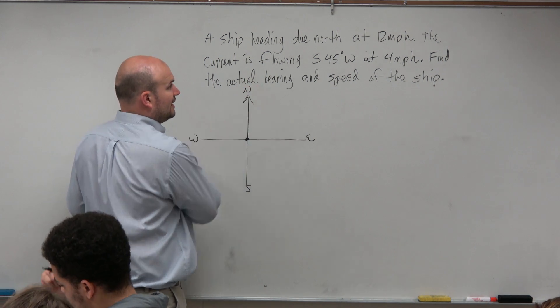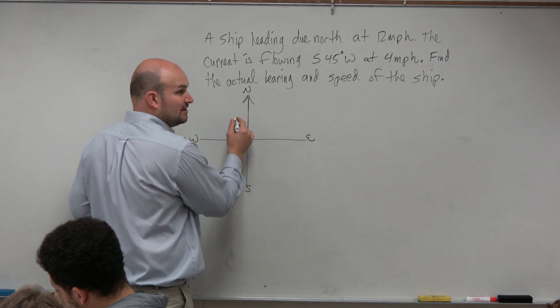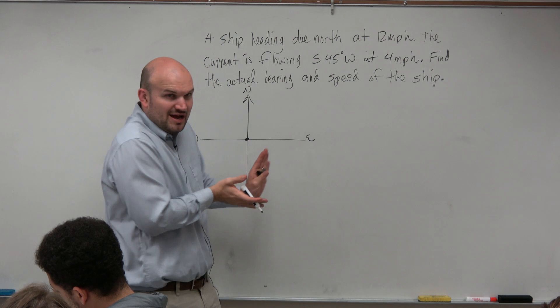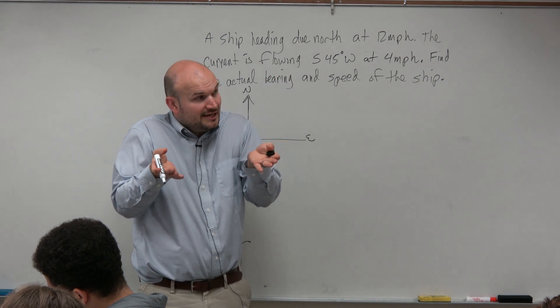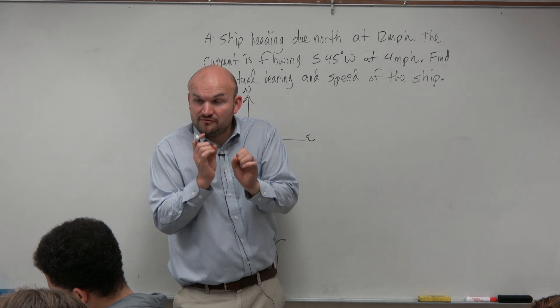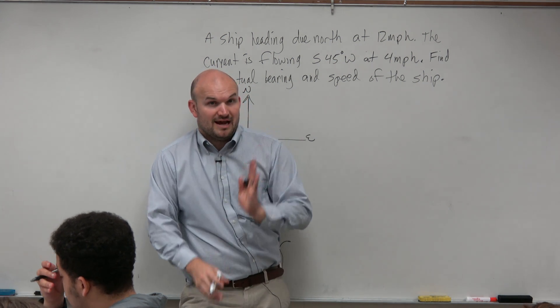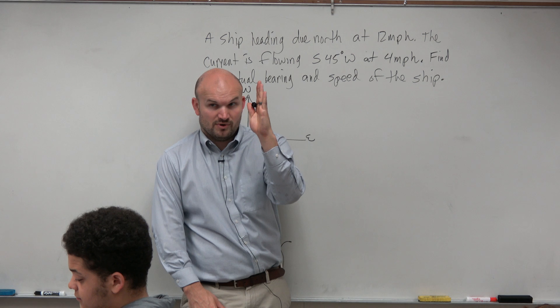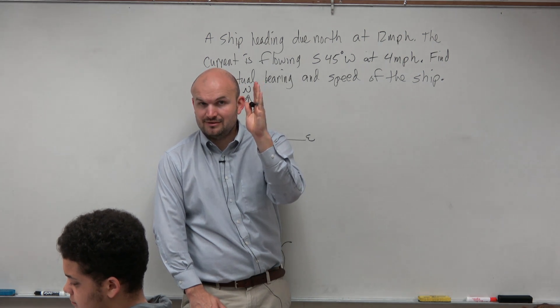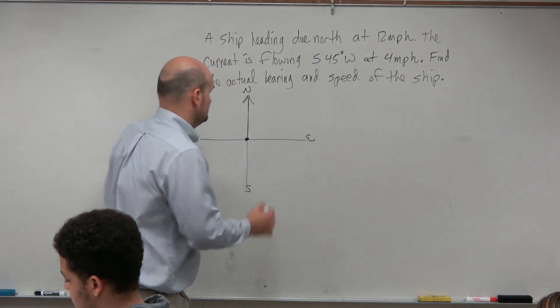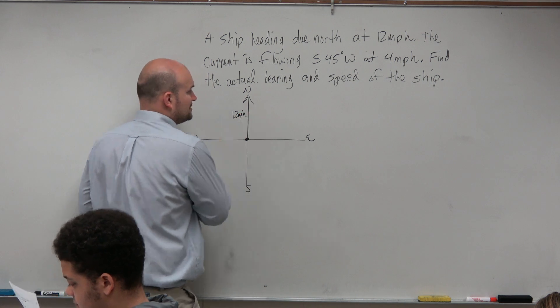So you're heading due north at 12 miles per hour. Now, what should 12 miles per hour represent? If we have our direction, remember a vector - if we're going to represent a ship as a vector, we have magnitude and direction. We have our direction heading due north. So what do you think 12 miles per hour is going to represent? The magnitude, right? 12 miles per hour is our magnitude.